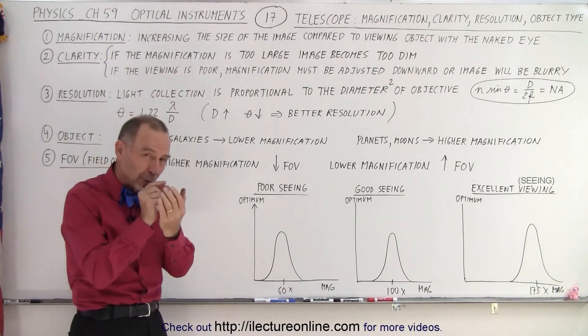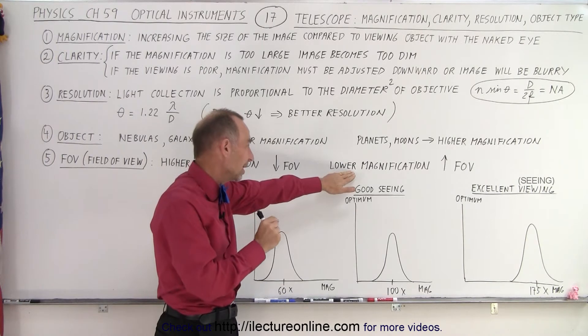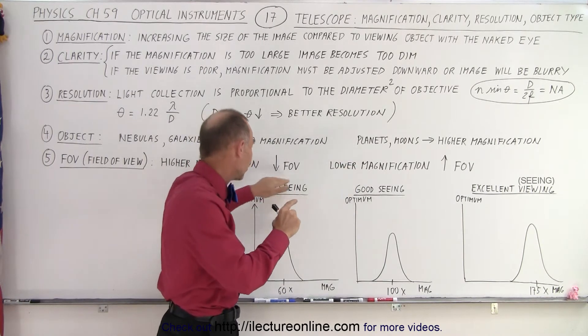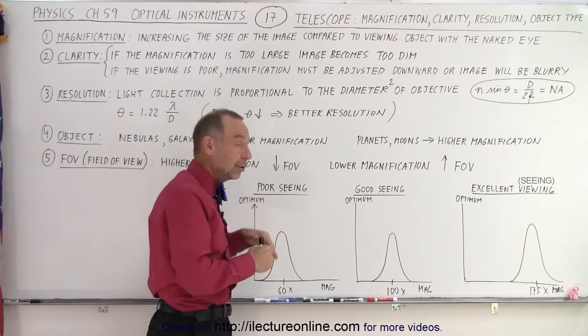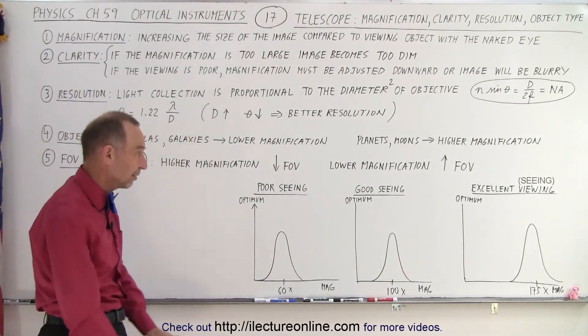If you want to zero in or zoom in on a very specific spot and get some more detail, you can go to higher magnification and allow the smaller field of view to occur, because you just want to zero in on a specific thing.